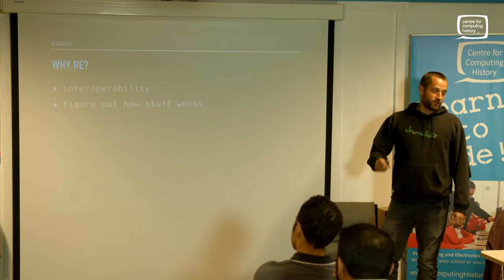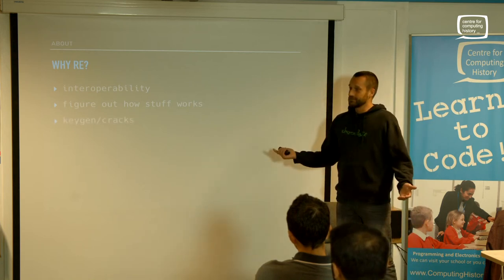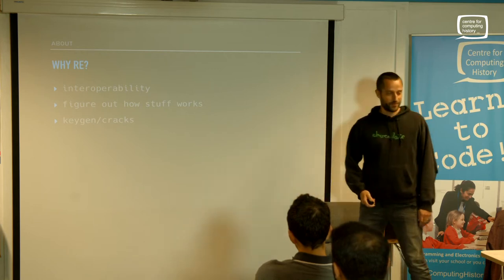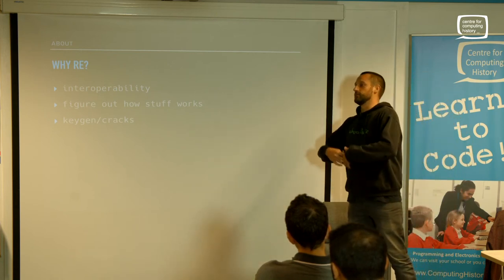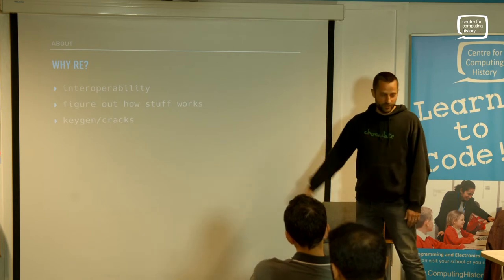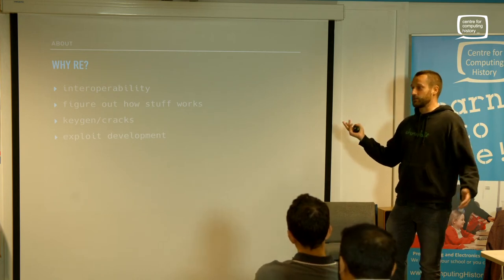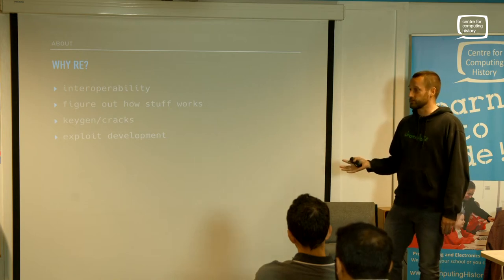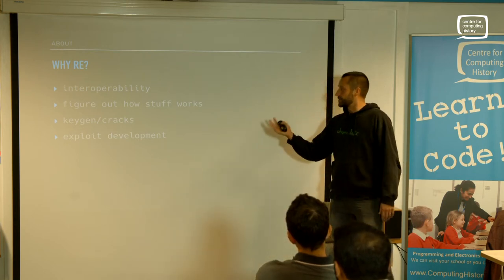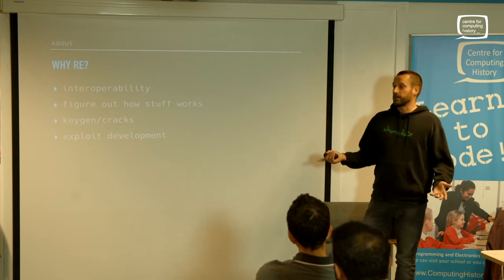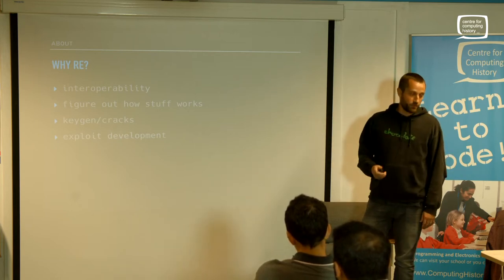We just want to know how it works - curious as we are, we like to delve into systems. Keygens and cracks: you reverse engineer the serial generation algorithm to get your keygens, or the copy protection or the 30-day timeout to generate your cracks. Exploit development: binary exploits can be found more easily in open-source software, but sometimes you don't have the code, so you've got to reverse engineer it to find any possibility of exploiting the application.